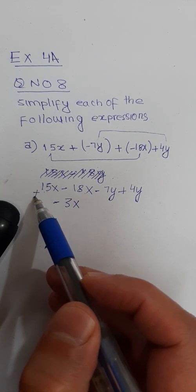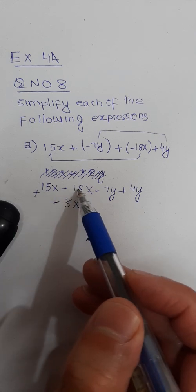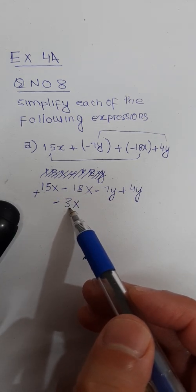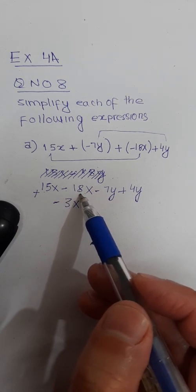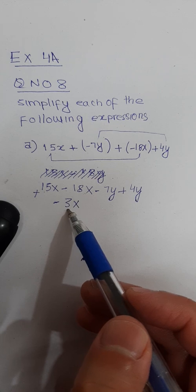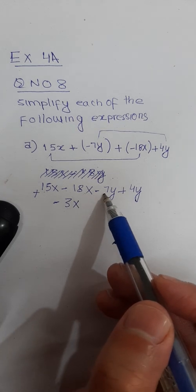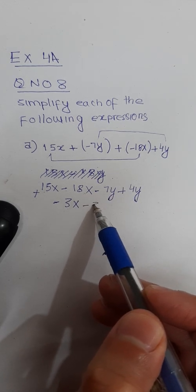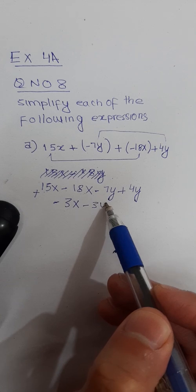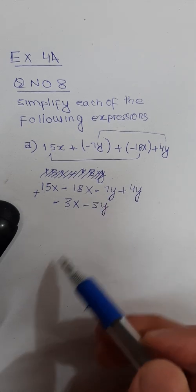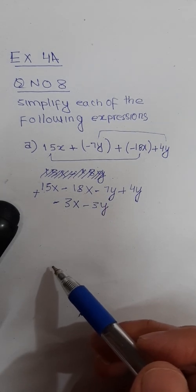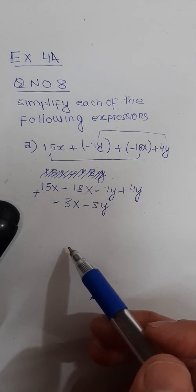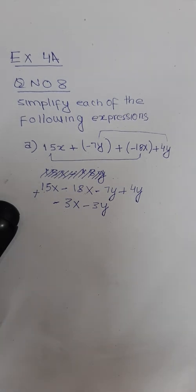15 is positive, 18 is negative, so you retain the sign of the larger number. Minus 7y plus 4y is minus 3y. So the simplified answer for part a is minus 3x minus 3y.